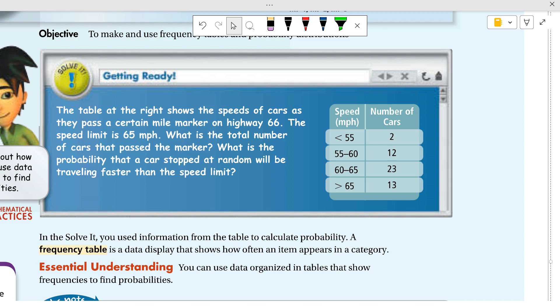14 and 23 make 37. 37 and 13 make 50. Well, there's 50 cars that passed it. What's the probability that a car stopped at random would be traveling faster than the speed limit? Well, probability is the number of favorables, 13 out of the total number 50. If we reduce that to a decimal it's 0.26, so it's 26 percent of them would be stopped and possibly given a ticket for speeding.